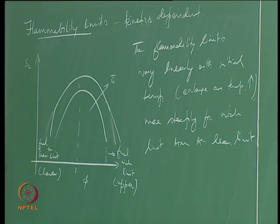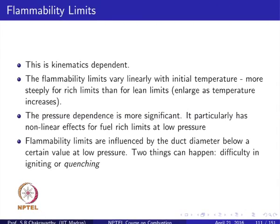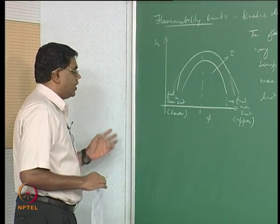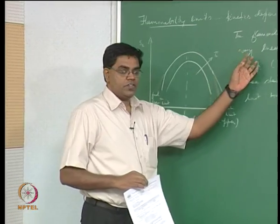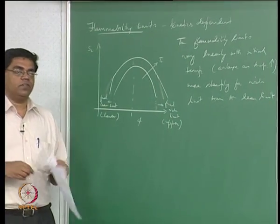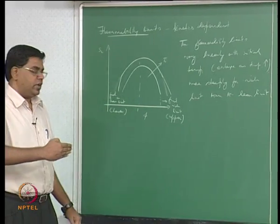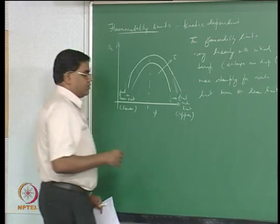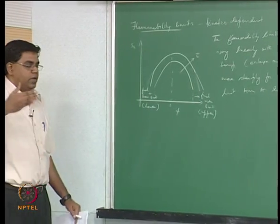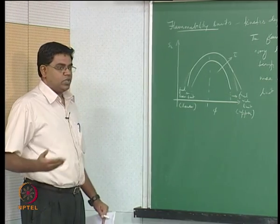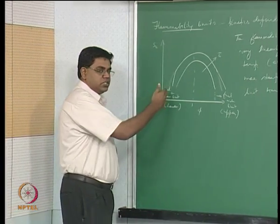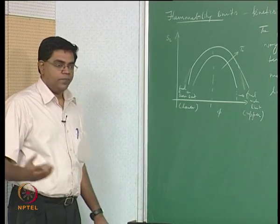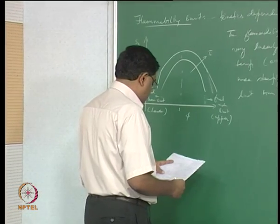The limit we discuss is the equivalence ratio or fuel-air mass ratio. Given a linear variation, for example if at 300 K you have a known lean limit and you know the slope of the line connecting temperature with the lean limit, you can predict what the lean limit should be at, say, 400 K, and how it should decrease accordingly.